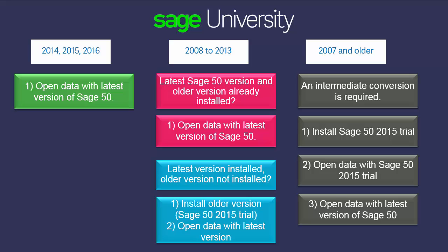Remember, if you are updating data from versions 2014, 2015, or 2016, you can open the company directly with the latest version of Sage 50. If you are upgrading data from versions 2013 or older, you may need to complete some additional steps in order to get your data upgraded to the latest version of Sage 50.